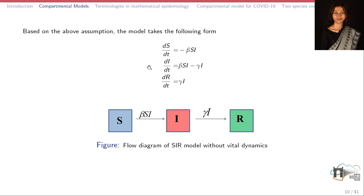The individuals from the infected compartment are moved to the recovered compartment at a rate proportional to the number of infected individuals, that is gamma times I. Here gamma is the recovery rate coefficient, and it is also assumed that the recovered individuals gain permanent immunity. With these assumptions, this is the basic SIR model without vital dynamics — we are not considering death and birth in the given population.